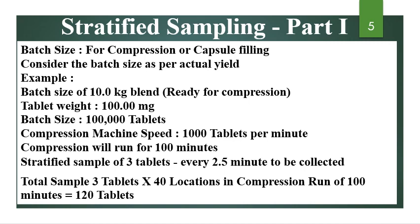You have to divide the compression run into 40 locations, which are the strata. For example: batch size is 10 kg blend ready for compression, tablet weight or capsule fill weight is 100 mg, batch size is 1 lakh tablets. Compression machine speed is very important here to decide the locations across the compression run. If the compression machine speed is 1000 tablets per minute, the compression will run for 100 minutes. Stratified samples of 3 tablets every 2.5 minutes are to be collected, dividing the 100-minute run into 40 different time interval locations. Total samples: 3 tablets into 40 locations = 120 tablets.